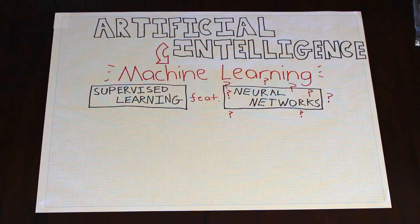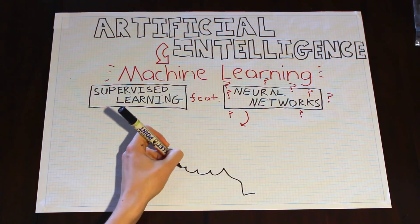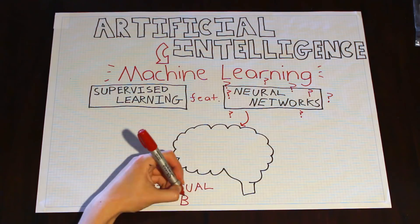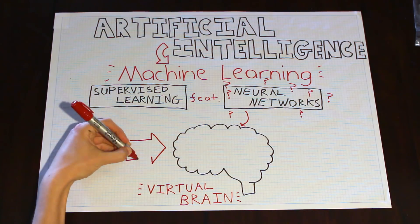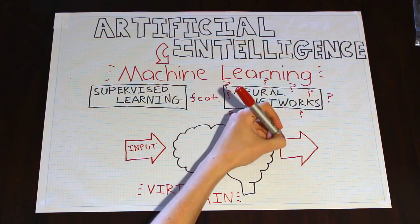What is a neural network? Well, one way to look at it is as a virtual brain, which performs a specific task by taking inputs and turning them into outputs.